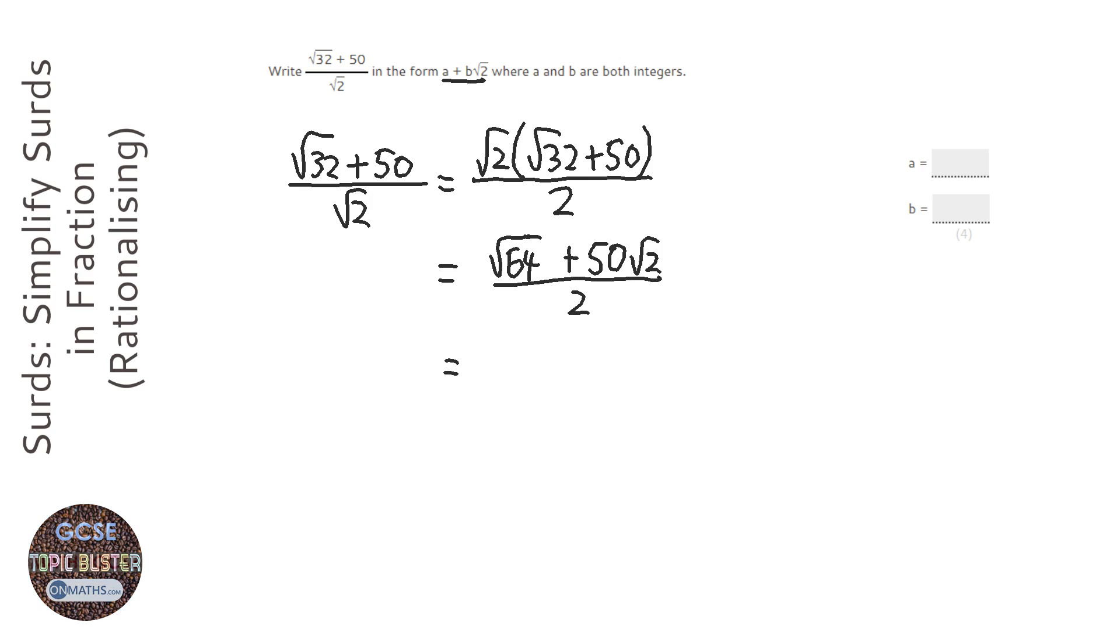I know root 64 is just 8. So it's 8 plus 50 root 2 over 2. And then what I can do is just divide top and bottom by 2.